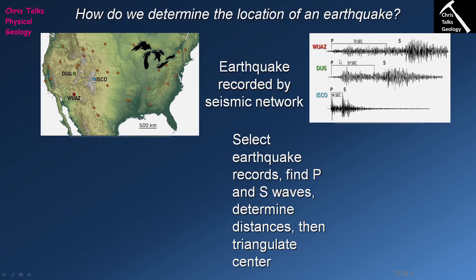On this diagram they have marked the time between the arrival of the first P wave and the first S wave. At WUAZ it took 73 seconds, at DUG it took 57 seconds, and at ISCO it took only 14 seconds. This instantly tells us that ISCO is clearly closer to the earthquake than WUAZ.